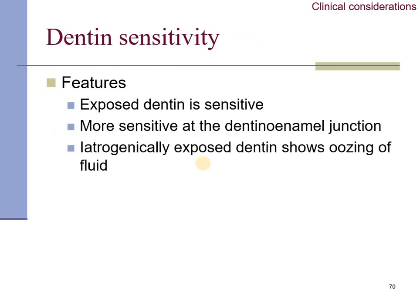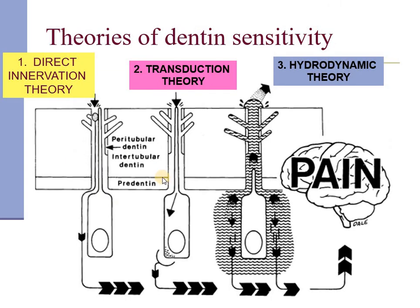The most important clinical feature about dentine is dentine sensitivity. Once the dentine is exposed, it shows sensitivity — this could be iatrogenic or microbial. There are three theories of dentine sensitivity: the direct innervation theory, the transduction theory, and the hydrodynamic theory.